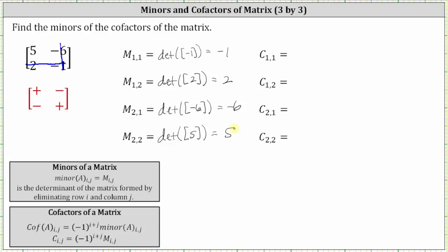I purposely did not use vertical bars to represent the determinant, because it's a little bit confusing. If we use vertical bars to represent a determinant of a one by one matrix, it might be confused with absolute value. For example, for the determinant of a one by one matrix where the entry is negative six, we could use vertical bars to represent the determinant, but this might be confused with the absolute value of negative six. The determinant of the one by one matrix with an entry of negative six is negative six, but because that can be confusing, I am using different notation for determinant.